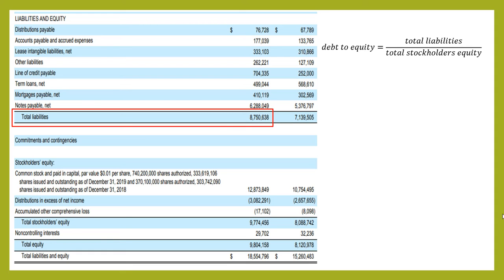We then have to get the total stockholder's equity, and this is where it gets a little bit confusing. There is a line that says total stockholder's equity, but that's not the one we're going to use — we're going to use the total equity. The SEC's definition of debt to equity, and generally the accepted definition, includes non-controlling interest because they are equity capital in the company, so we're going to include that.